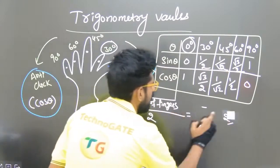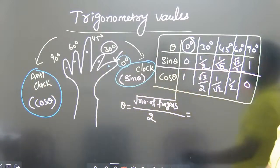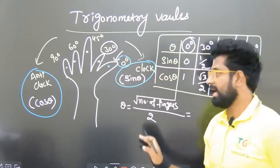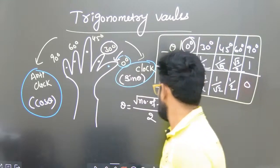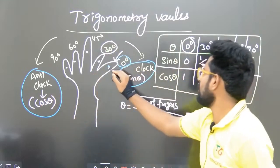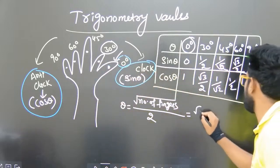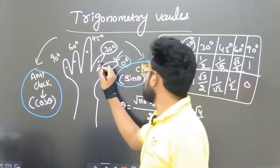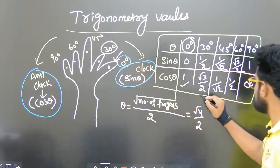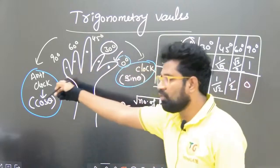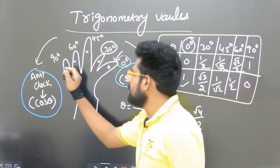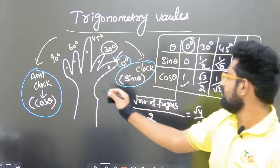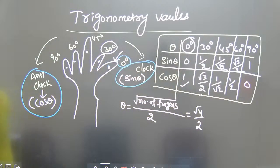From the diagram, for cos theta we look in the anticlockwise direction. At 0 degrees, there are 4 fingers: root 4 by 2 = 1. At 30 degrees, there are 3 fingers: root 3 by 2. At 45 degrees, there are 2 fingers: root 2 by 2, and simplifying gives 1/√2. At 60 degrees, there is only 1 finger: root 1 by 2 = 1/2. At 90 degrees, there are no fingers: root 0 by 2 = 0.